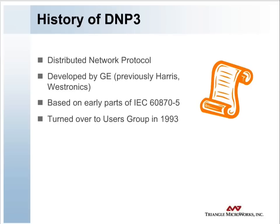DNP was originally created by Westronic, Inc., now GE Harris, in 1990. In 1993, the DNP-3.0 Basic 4 Protocol Specification Document Set was released into the public domain. Ownership of the protocol was given over to the newly formed DNP Users Group in October of that year.